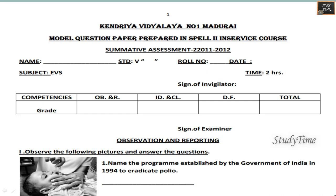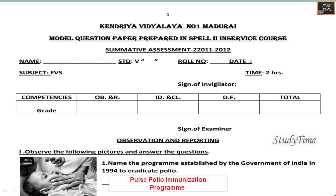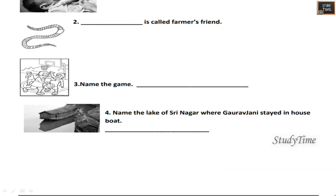First question: Observation and Reporting. This is a sample question paper for the year 2011 and 2012. Observe the following pictures and answer the questions. Name the program established by the government of India in 1994 to eradicate polio — the answer is Pulse Polio Immunization Programme. Dash is called Farmer's Friend — it is Earthworm. Name the game — it is Basketball. You can see a basket, so it is Basketball.